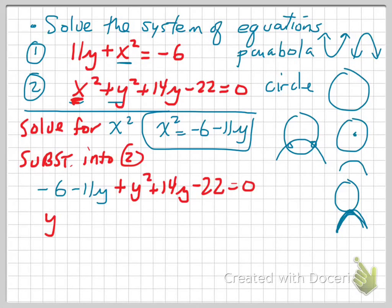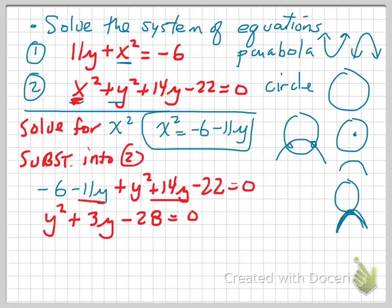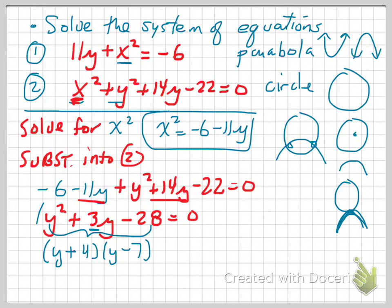So let's put it into standard form. We've got y squared, and minus 11y plus 14y gives us plus 3y. And minus 6 minus 22 is minus 28, so y squared plus 3y minus 28 equals zero. Now I've got a trinomial — are there any factors of negative 28 that add up to positive 3? It's easy to factor by inspection since the coefficient of y squared is 1. The factors are y plus 4 and y minus 7, since 4 times negative 7 equals negative 28 and 4 plus negative 7 equals positive 3, and that equals zero.